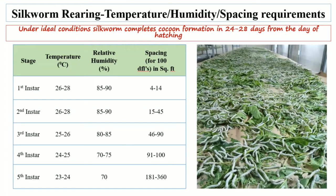During the second instar stage, 26 to 28 degrees centigrade temperature is required with 85 to 90 percent relative humidity, and the space requirement for 100 disease-free layings is 15 to 45 square feet. During the third instar stage, the temperature requirement changes to 25 to 26 degrees centigrade with relative humidity of 80 to 85 percent.